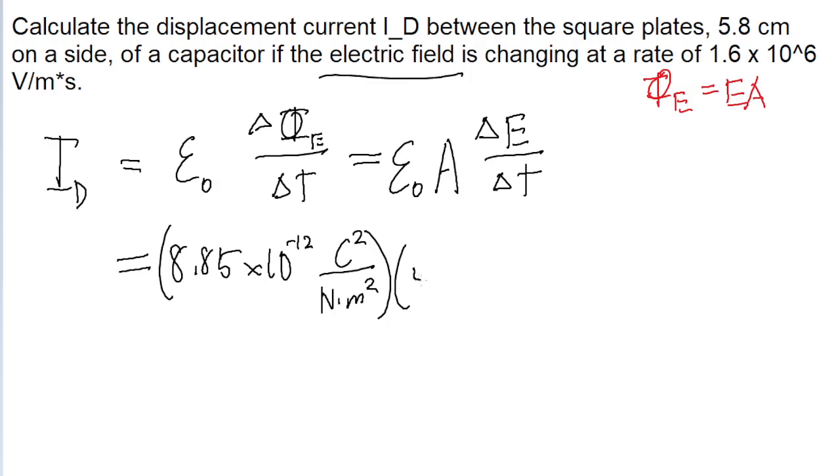So the area is 5.8 centimeters, or 0.058 meters. That's squared to give us area. And then we multiply by the rate of change of the electric field, which is given as 1.6 times 10 to the power of 6 volts per meter second.